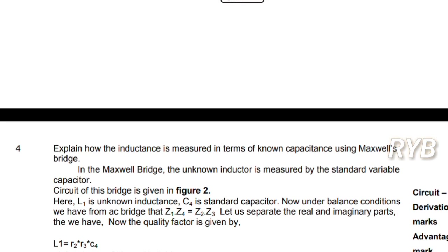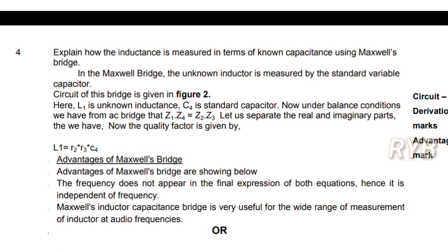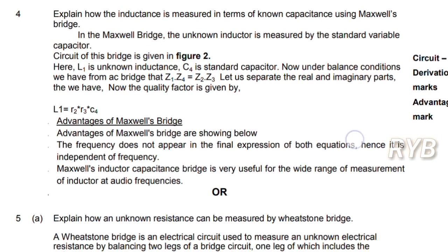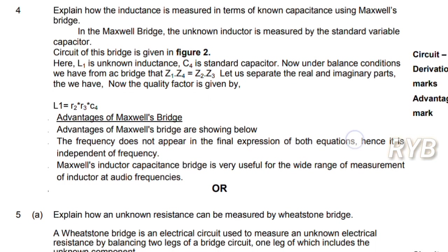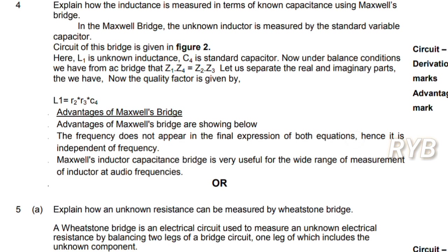Coming to Unit 2: explain how inductance is measured in terms of known capacitance using Maxwell's bridge. You need to draw Maxwell's inductance-capacitance bridge. If you draw the circuit you will get four marks, derivation five marks. Also draw the phasor diagram — that is important. If you draw the phasor diagram and state the advantages of Maxwell's bridge, you will get one or two additional marks.